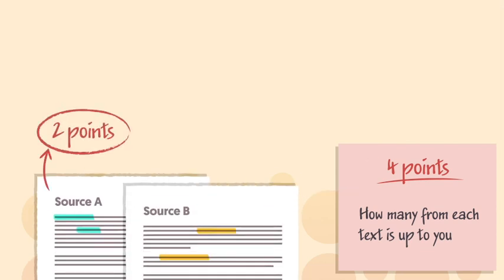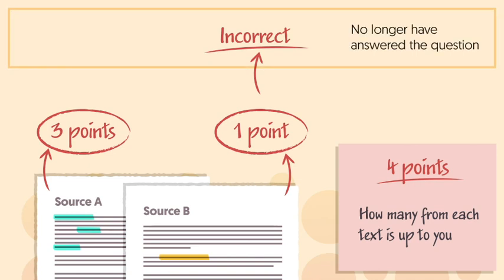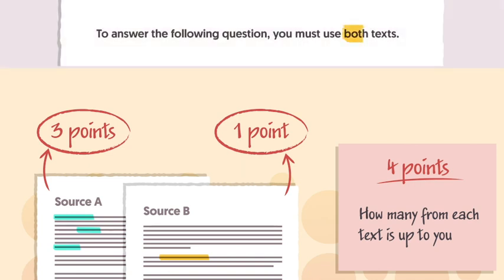You could have two points from Source A and two from Source B, or three from Source A and one from Source B. But, the only problem with the second example structure, taking three from Source A and one from Source B, is that if your singular point from Source B is incorrect, you'll no longer have answered the question. The question asks you to use information from both texts, so if your one point from Source B is wrong, you've only made correct points about Source A.